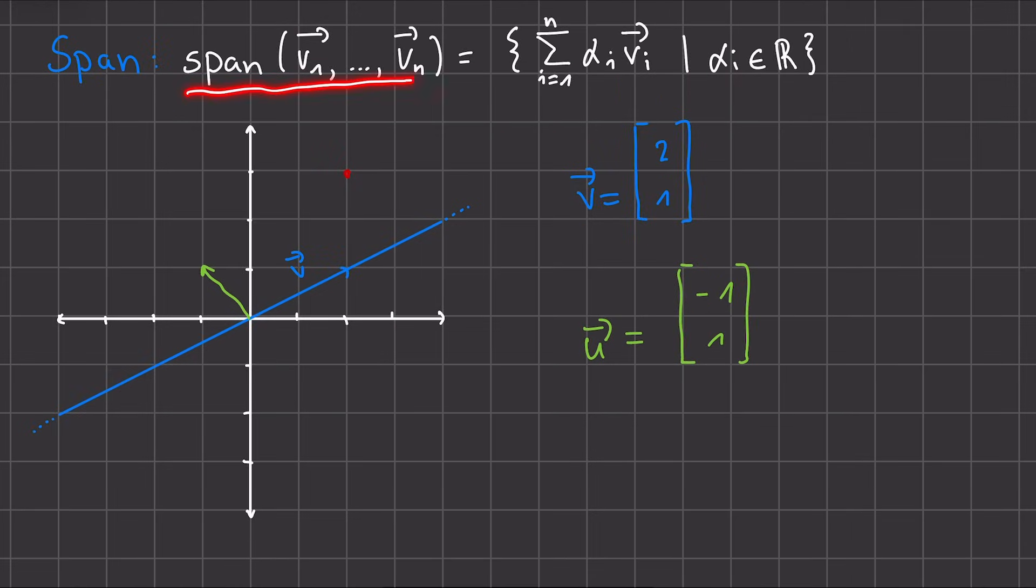Formally, the span is defined like this. So we care about a set of vectors, our v_1 to v_n. And we ask ourselves, what are all the points we can reach through linear combination of these v_i from 1 to n? And here, our a_1 or alpha_1 is in the real numbers. They can be any scalar in the set.